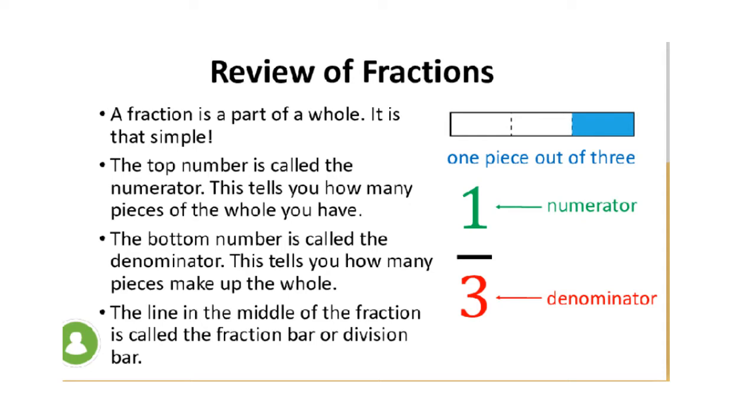The top number is called the numerator. This tells you how many pieces of the whole you have. The bottom number is called the denominator. This tells you how many pieces make up the whole. The line in the middle of the fraction is called the fraction bar or division bar.